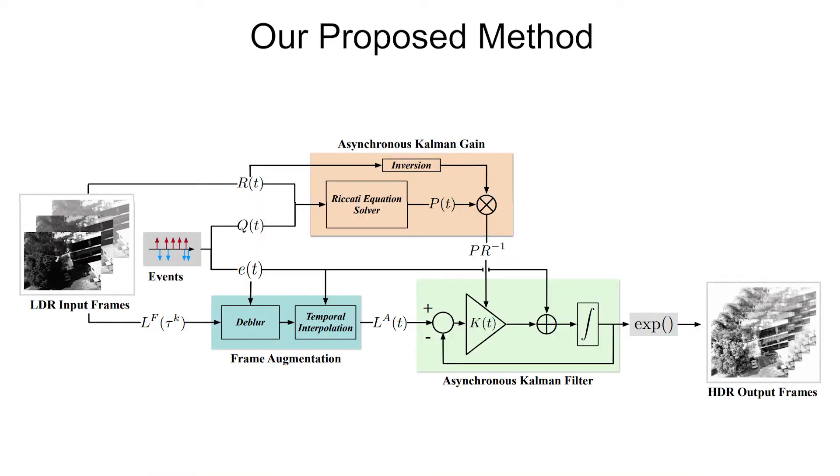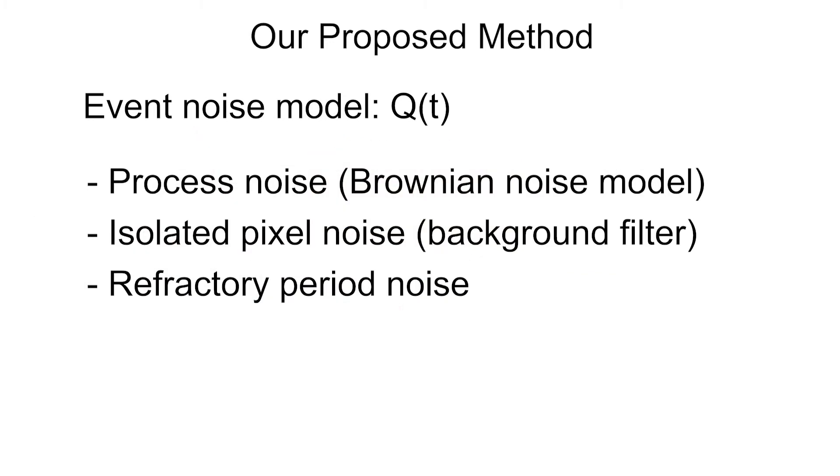We use zero-mean Gaussian noise models for events and frames, with covariances Q and R. The covariance of the event noise model, Q, is based on three factors: a process noise applied equally to all pixels based on the principles of Brownian motion; isolated pixel noise, based on the assumption that spatiotemporally isolated events are more likely to be noise; and refractory period noise that compensates for events missed due to a refractory dead zone immediately following an event firing.